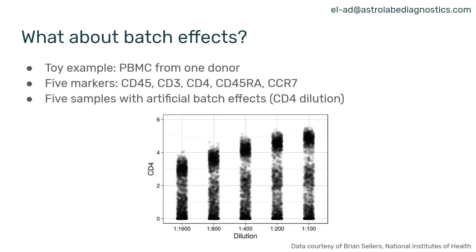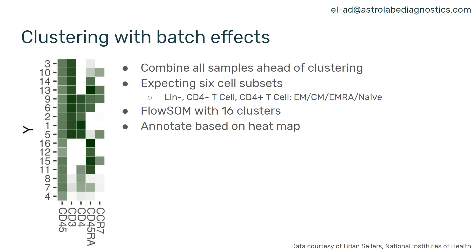When we take this data and cluster it — we took all five samples, combined them, which is a very common practice in both mass and flow cytometry — we clustered it with 16 clusters in FlowSOM. We then wanted to annotate the clusters based on the heatmap. To the left you're seeing the heatmap with five markers and the intensity of each one, so you can see the CD3 positive and negative cells, the CD4 positive and negative cells, and so on.